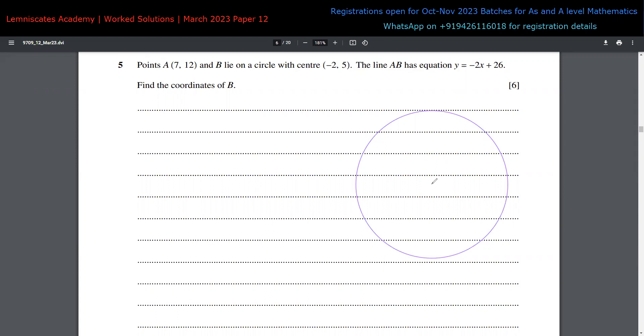Let's say this is a circle with center at (-2, 5), and point A at (7, 12) is somewhere here. Point B is somewhere here on the circle. If I draw a line connecting A and B, this equation is Y = -2X + 26. Because the equation intersects with the circle, we need to find the equation of the circle to find this coordinate.